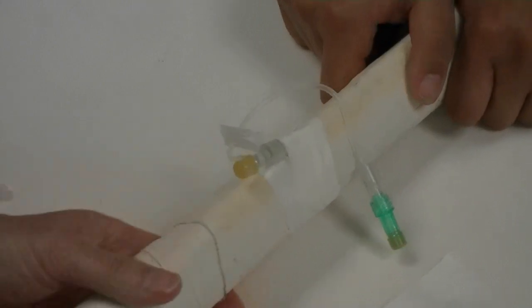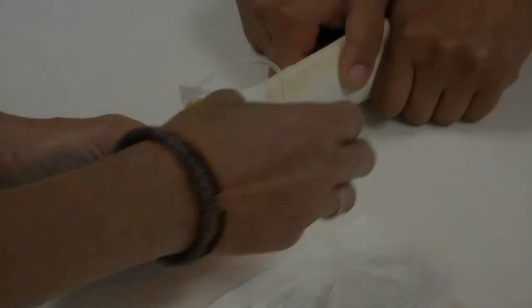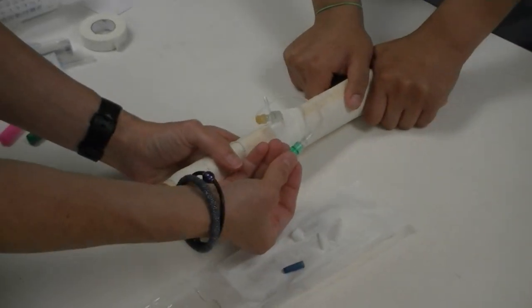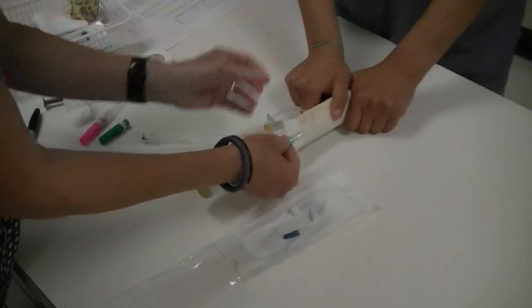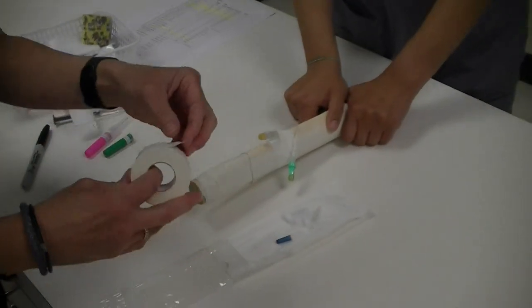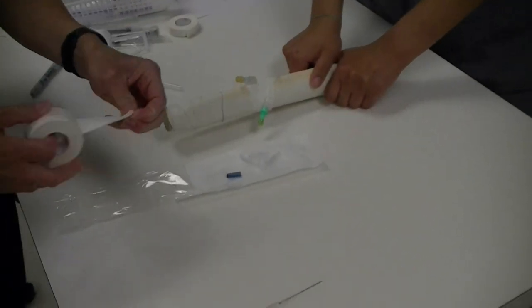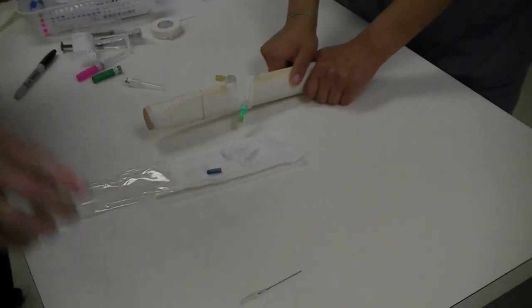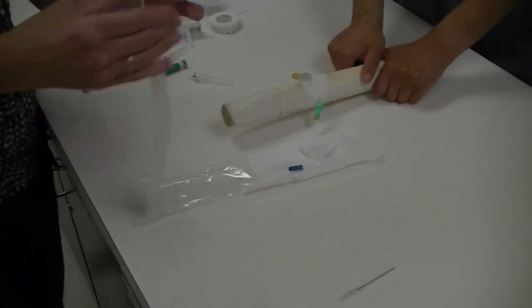The only thing remaining is that I need to secure this additional accessory injection port. To do that, for a large dog, I'm going to use brown one-inch tape.